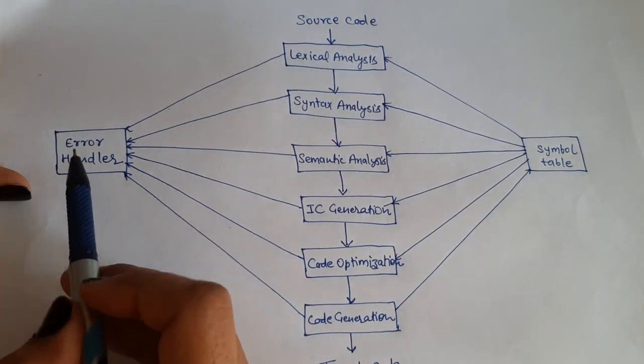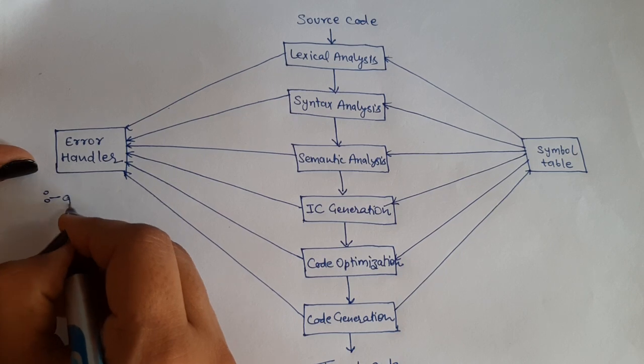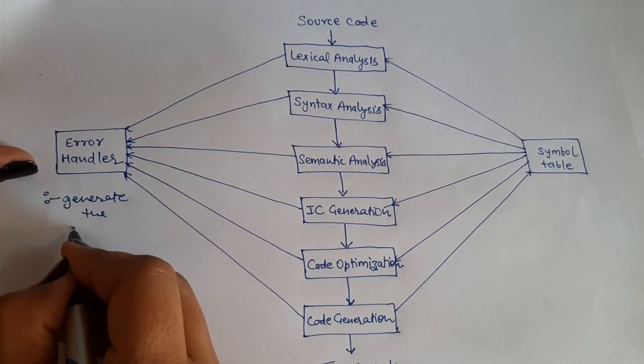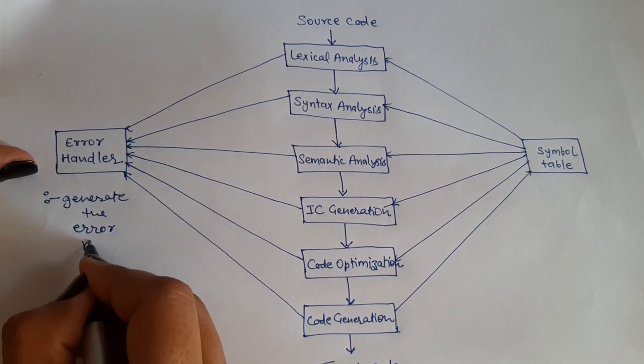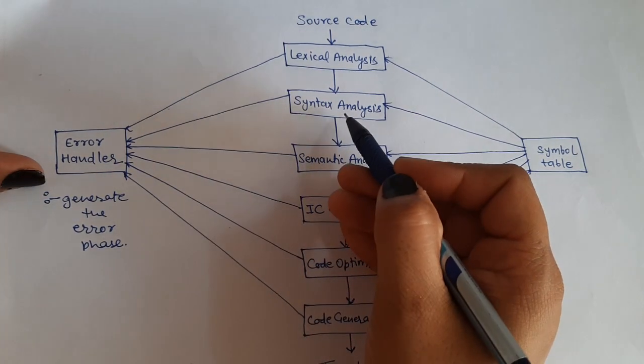But each phase is connected to the error handler. Error handler, what does it do? It generates the error message at each phase. If you have an error in the lexical analysis phase, then you will report it. Similarly, in the syntax analysis phase or parser, then you will report it.